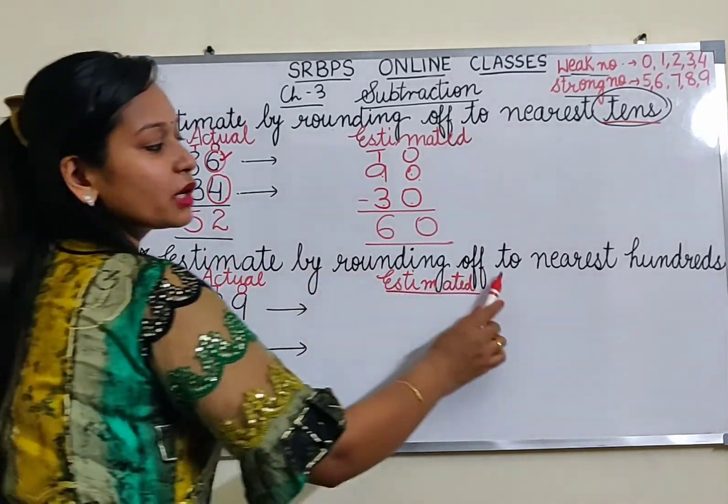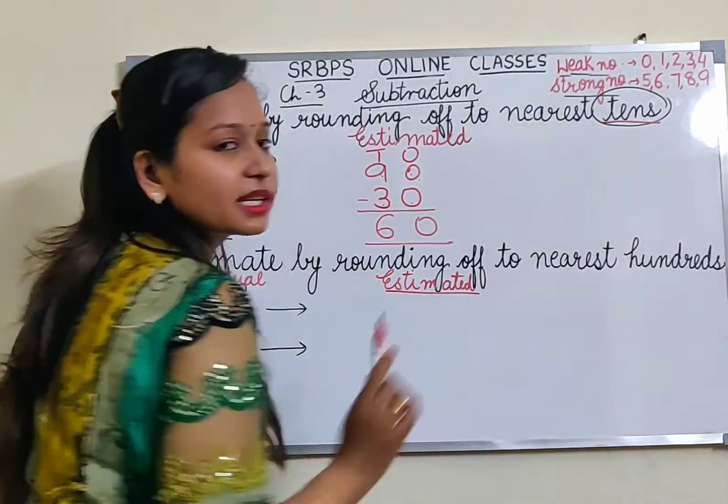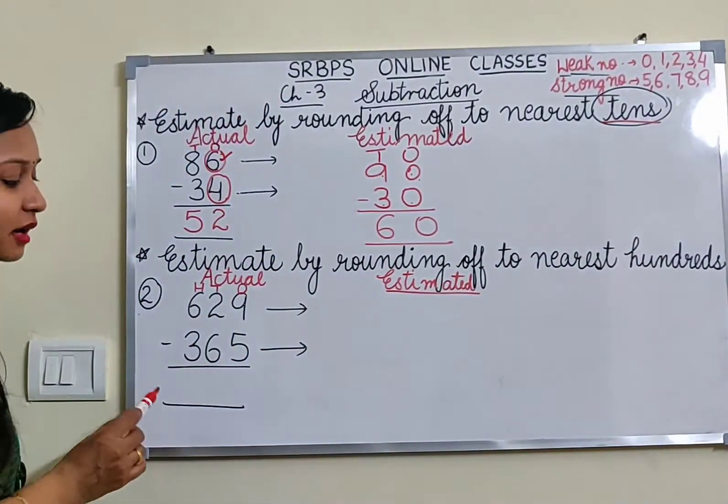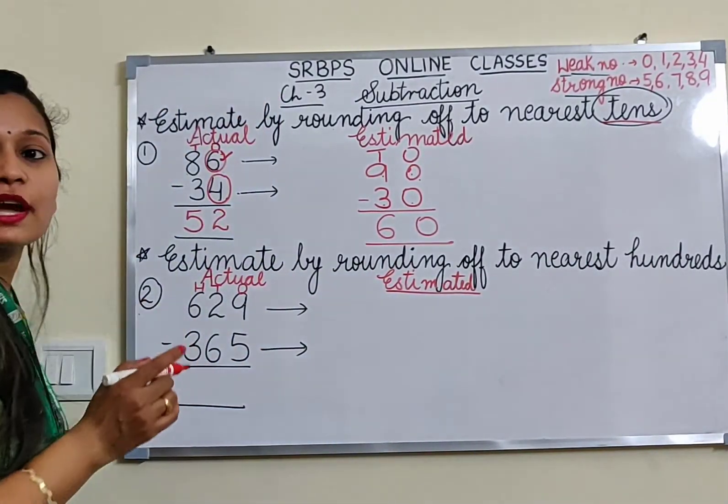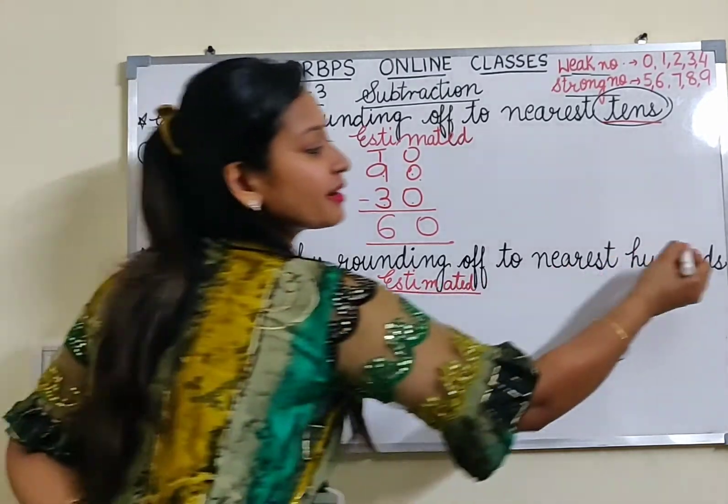Estimate by rounding off to nearest hundred. Now we have to round off to nearest hundred. Nearest hundred means this time we will circle the digit in the right-hand side of the hundreds place.